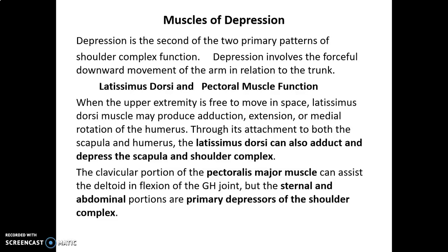When the upper extremity is free to move, the latissimus dorsi produces adduction, extension, and medial rotation of the humerus. Through its attachment to both the scapula and humerus, the latissimus dorsi — being a large muscle — can produce adduction, extension, and medial rotation of the humerus, and can also stabilize the scapula.